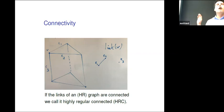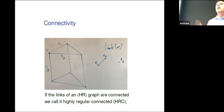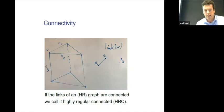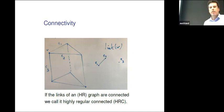Later on, I will tell you that we are not always able to achieve higher connectivity. The reason will always be this kind of prismatic situation that occurs, where it breaks when you look at the link. But if it does remain connected, and it's already highly regular, we will call it highly regular connected, HRC.